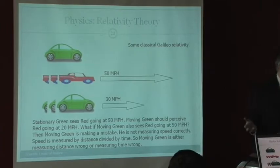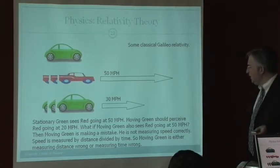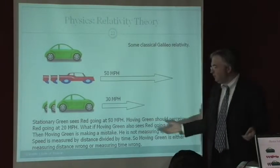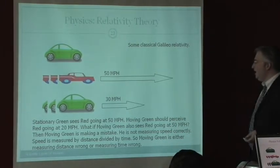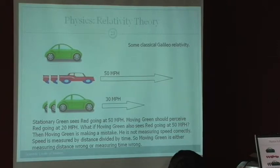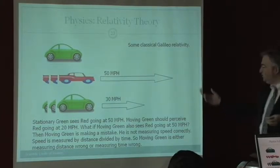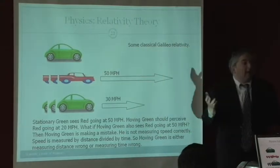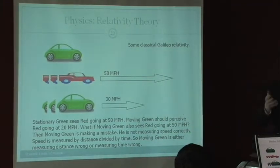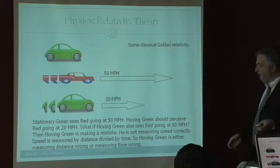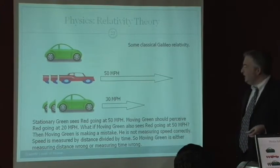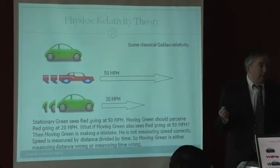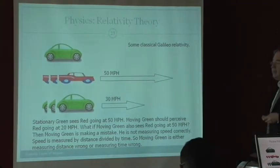Well, there's something wrong. The moving green is making a mistake. He's going 50 miles an hour, and he's going 30 miles an hour, and he should see him at 20. He's not measuring the speed correctly. He's doing something wrong that's measuring speed incorrectly. Speed is measured by distance divided by time. 50 miles per hour. 50 miles is the distance divided by how long it takes, by an hour. So moving green is either measuring distance wrong. He's either measuring distance wrong or measuring time wrong.